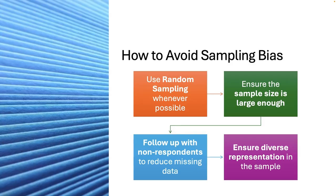So how do we avoid this sampling bias? Great ways are to use random sampling whenever possible, to ensure the sample size is large enough, also to follow up with non-respondents to reduce missing data, and also to ensure diverse representation in the sample.